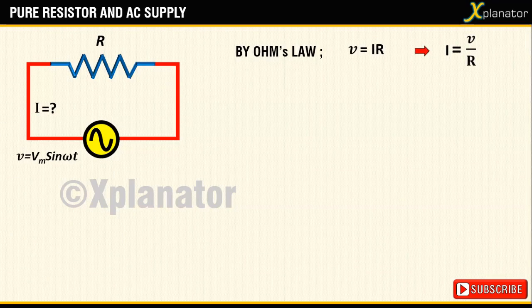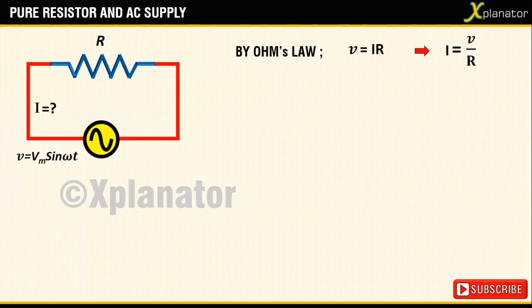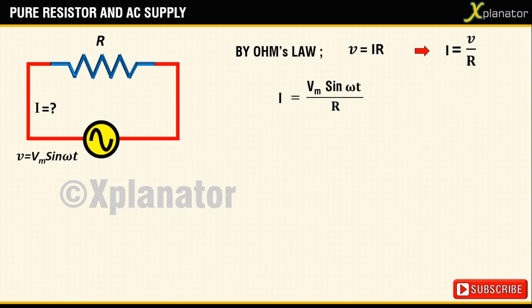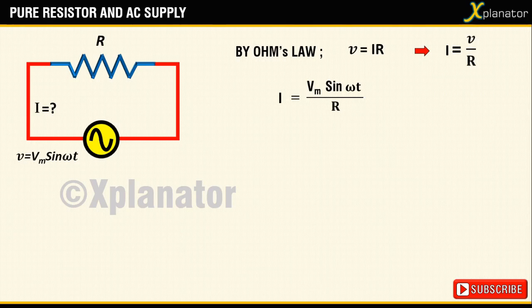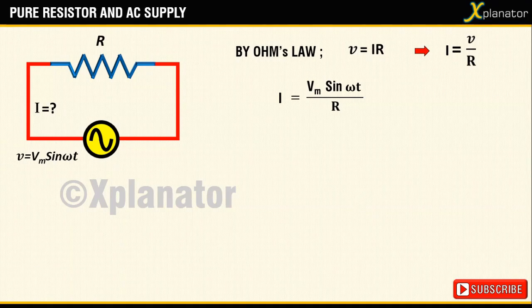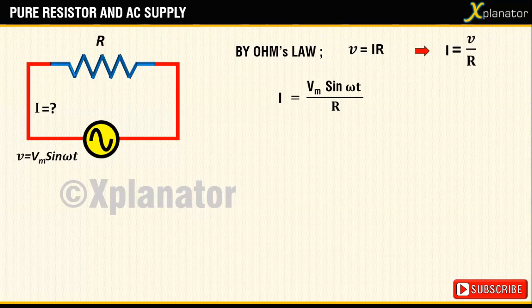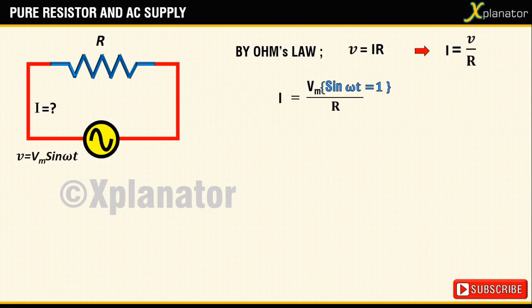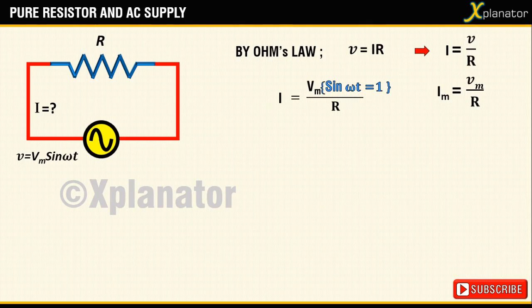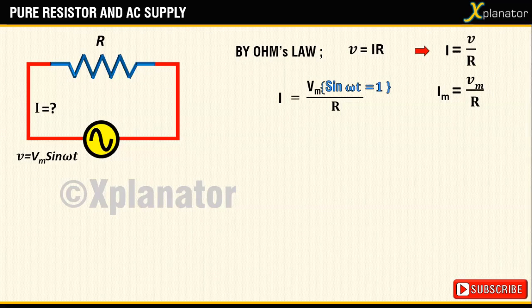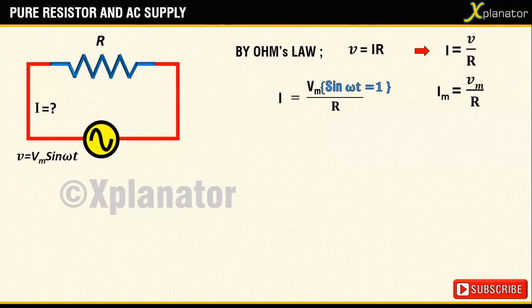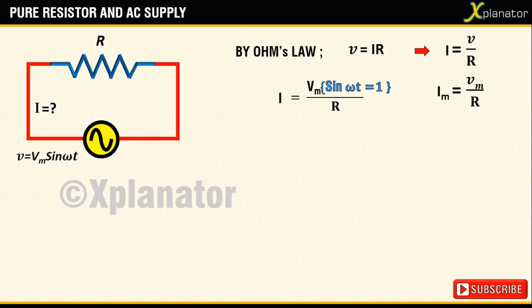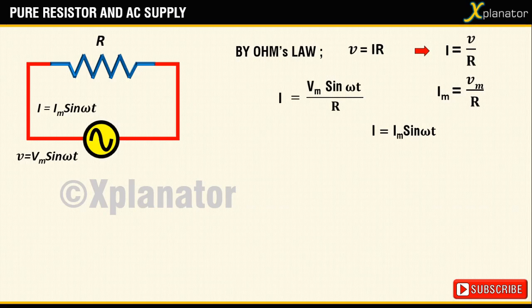Substituting the equation for voltage we get i equals vm sine of omega t divided by r. The value of current will be maximum when sine of omega t equals one. Hence, value of im, that is maximum current, will be vm divided by r.